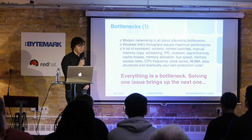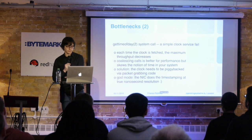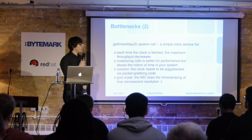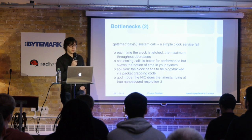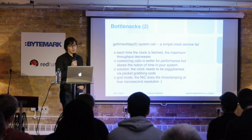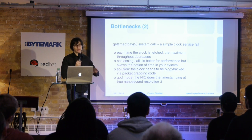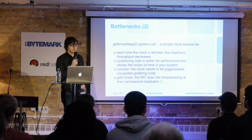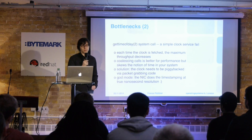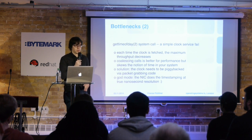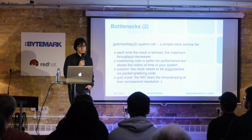Solving one problem just brings you to the next — it's a never-ending story. One small example is gettimeofday, which I'd call a simple clock service fail. You probably need the clock for accounting, but if you have a packet in user space and try to pull the clock from the system, you go into a context switch and maximum throughput decreases. You can merge calls to gettimeofday, but then your notion of time skews, which is bad for accounting or traffic management. One solution is to push the timestamp through the framework itself as packet metadata.